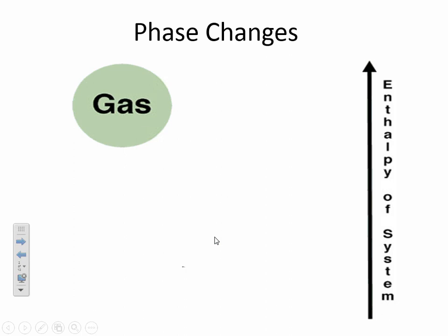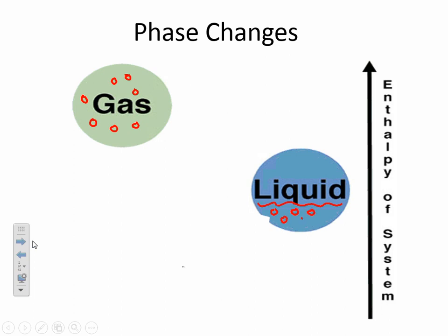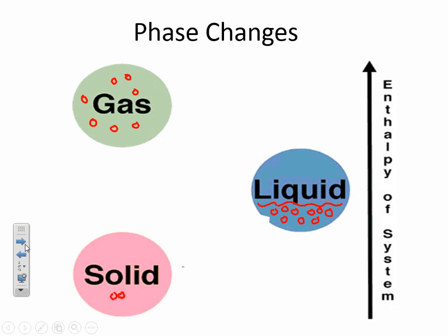We have three phases on Earth. We have the gas phase, where your particles are spaced really far apart — those are atoms or molecules of a gas. Our next phase is the liquid phase. In the liquid phase, you have particles that take the shape of the container, but the atoms are free to move around. And then we have the solid phase, where particles are in a rigid structure — so you can think of a crystal of salt or a diamond.